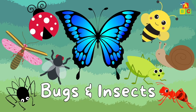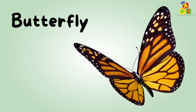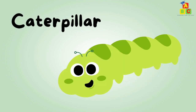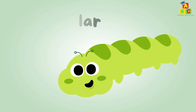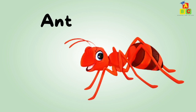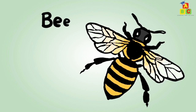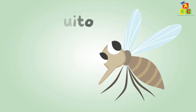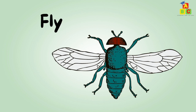Bugs and Insects. Let's learn the name of the bugs and insects. Butterfly. Spider. Caterpillar. Firefly. Ant. Mosquito. Fly.